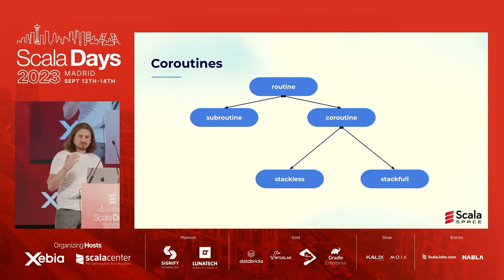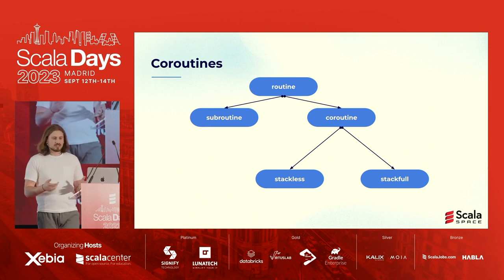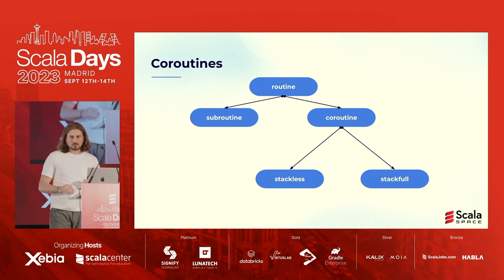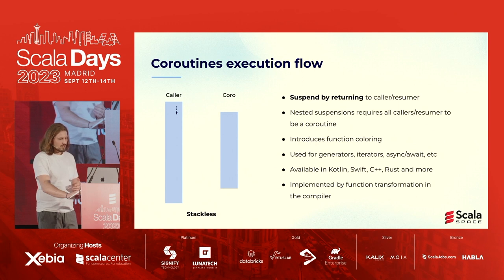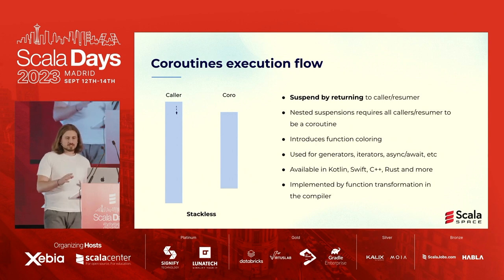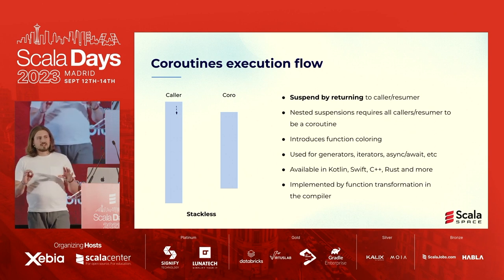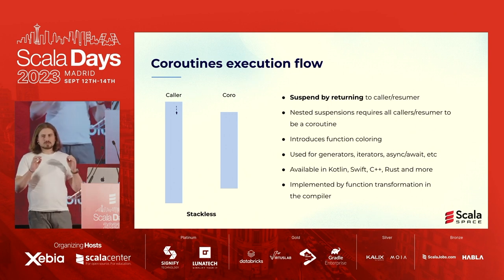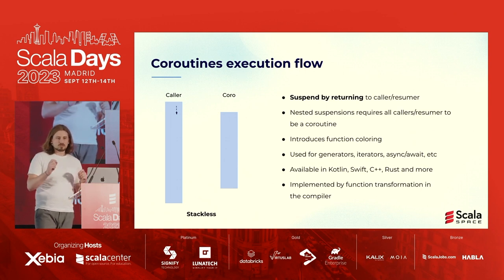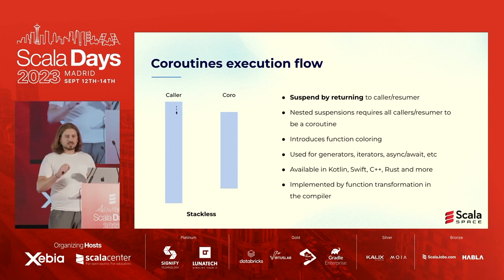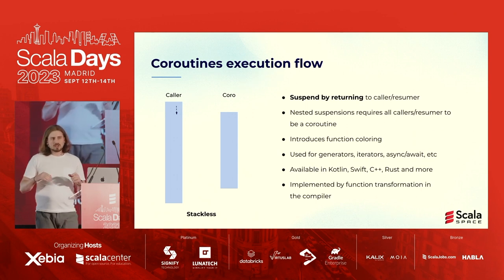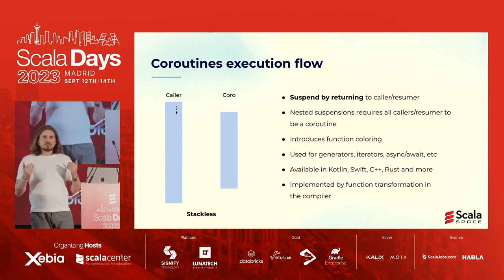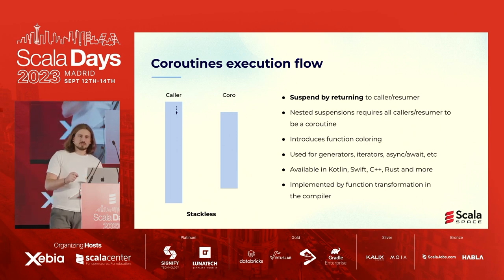There is not just one kind of coroutine — there are at least two. The first are stackless, the others are stackful. Starting with stackless ones: what's special about them is that they don't persist the whole execution context. That means when we suspend, we suspend only to our direct caller or resumer. If we'd like a nested chain of suspension, we'd need to either transform our code, or every function called in between would also need to be a stackless coroutine to allow suspending and resuming to a given point.